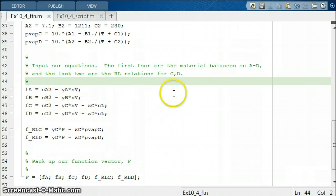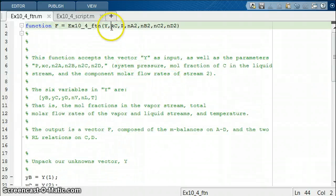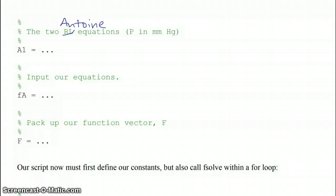Again, the only difference is you have these five as inputs now, which we therefore don't have to hardwire into this function for particular values of those inputs. Those values must come in somewhere. Now we have to use our script to define our constants. And in addition to that, because we're looking for a range of purities and therefore a range of temperatures that we're going to solve for, we have to call fsolve from within a for loop.